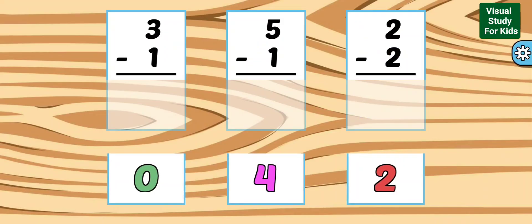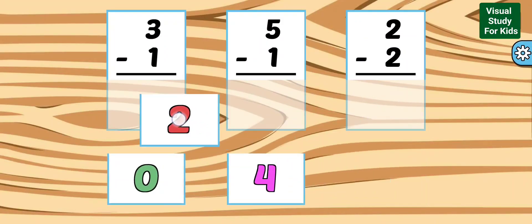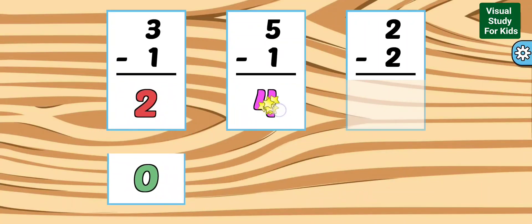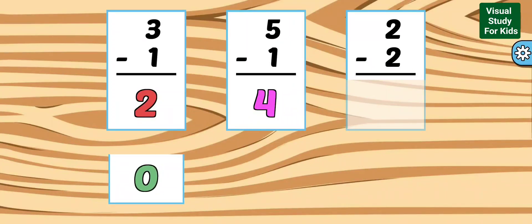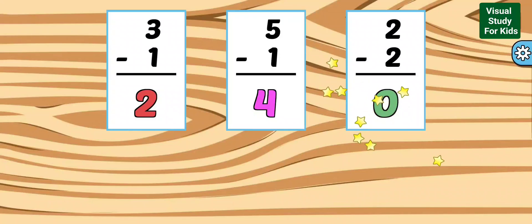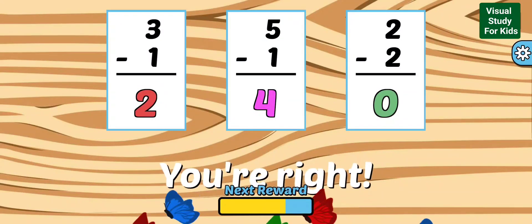Match each equation with the correct answer. 2: 3 minus 1 equals 2. 4: 5 minus 1 equals 4. 0: 2 minus 2 equals 0. You're right!